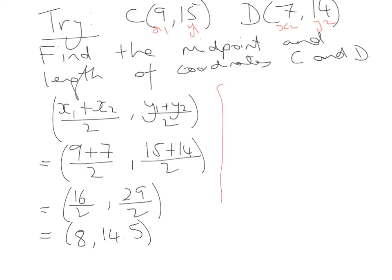I'm now going to move on to finding the distance or the length between CD so I can represent it like this, and I'm going to write in my formula so it's going to be √[(x2 - x1)² + (y2 - y1)²]. So we're going to fill it out.